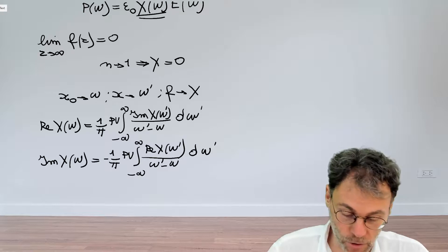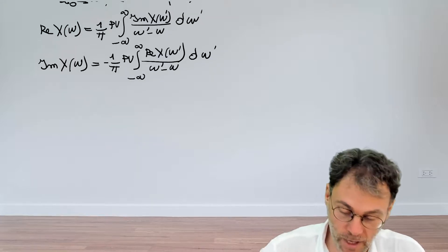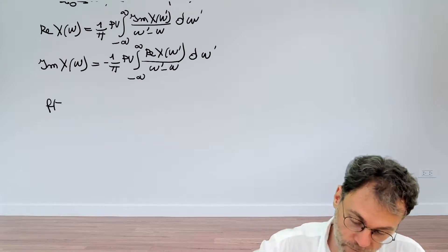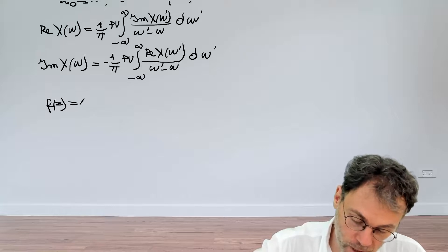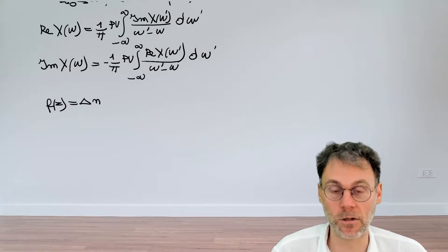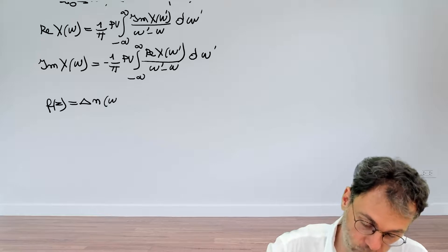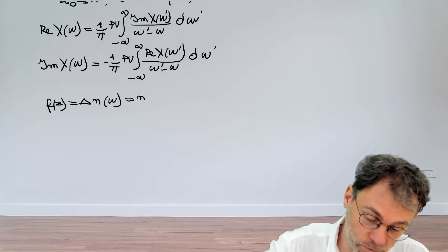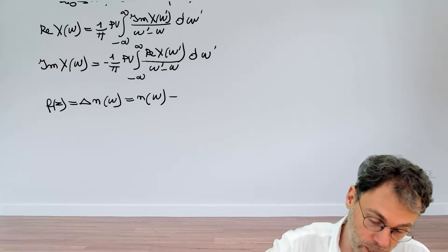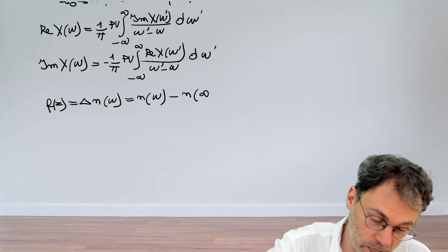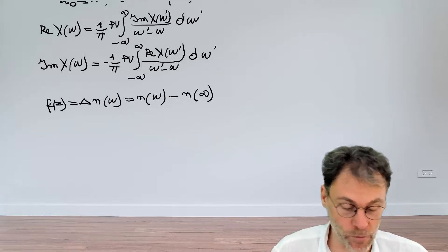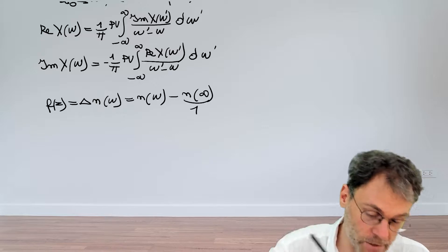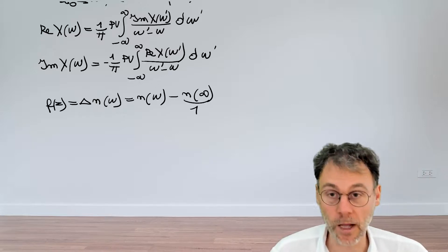Well it's not so difficult. If we have a function f of z which will now be, let's call this the difference in the refractive index as a function of omega, and by difference we mean the refractive index at omega minus the refractive index at omega equal infinity, and we know that this is one, then we have another valid function.